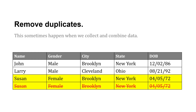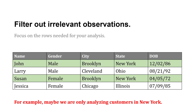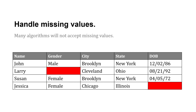Another quality technique might be data cleaning: doing things like removing duplicates or fixing inconsistencies in formatting. Also, filtering out irrelevant observations — if there's data that we don't need, we filter it out. Maybe we decide to omit or ignore empty columns where there's no data, or handling missing values. These might be some of our cleaning techniques.